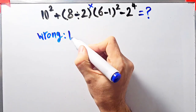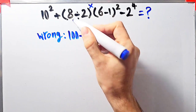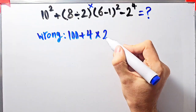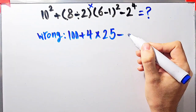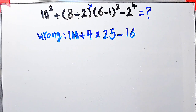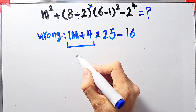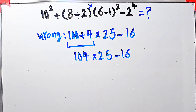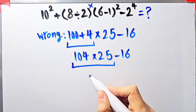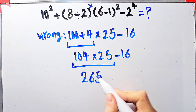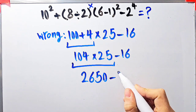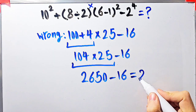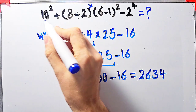Some people solve this question like this: they say 10 to the power of 2 equals 100, 100 plus 8 divided by 2 equals 4, then times 6 minus 1 which equals 5, and 5 to the power of 2 equals 25, then minus 2 to the power of 4 which equals 16. 100 plus 4 equals 104, 104 times 25 minus 16. 104 times 25 equals 2650, 2650 minus 16 equals 2634. They say the final answer equals 2634.